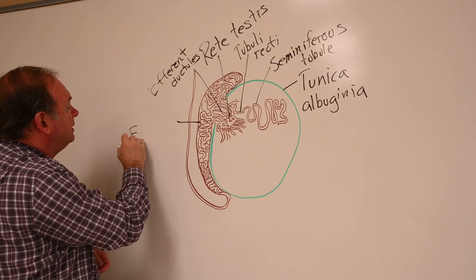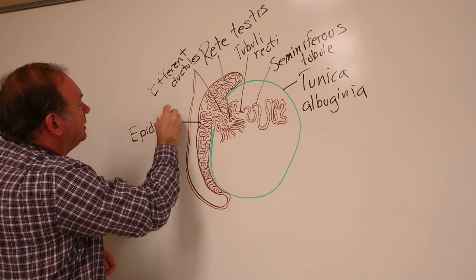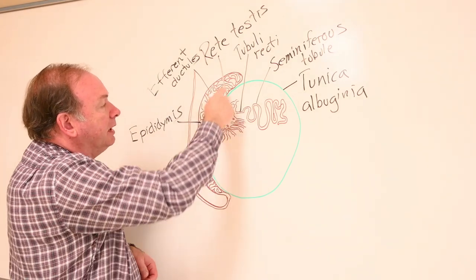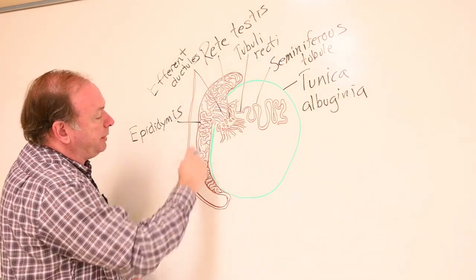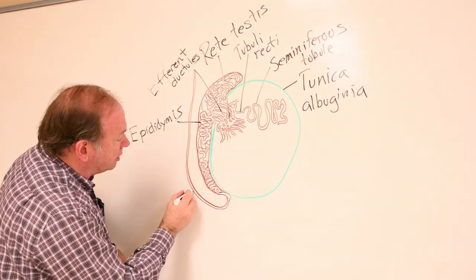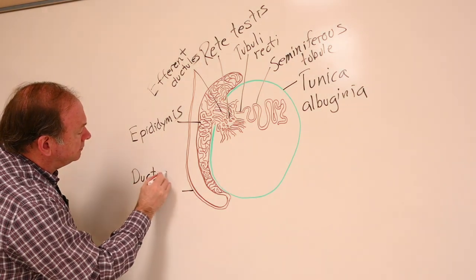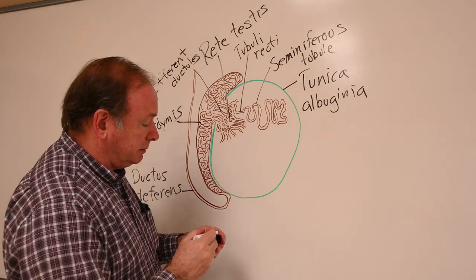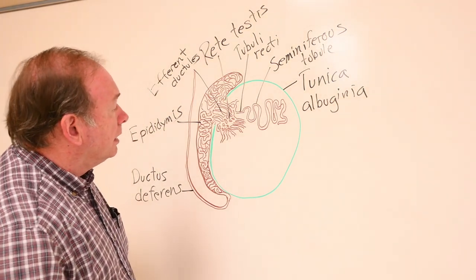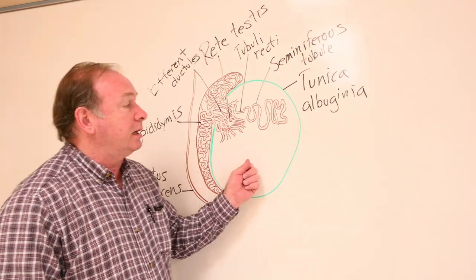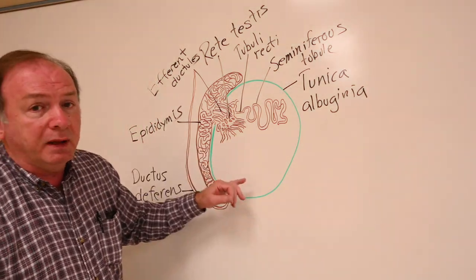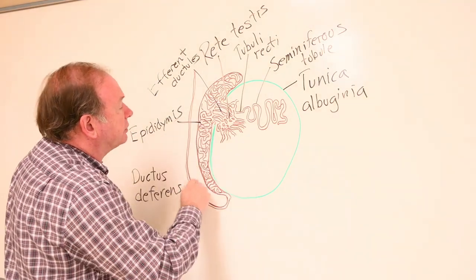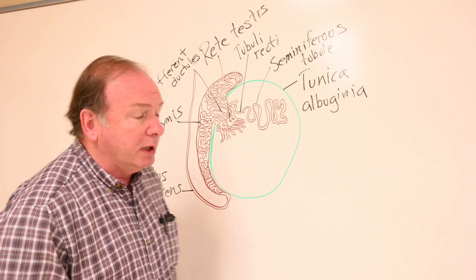The epididymis has a region referred to as the head, the body, and the tail. From the top to the bottom, that's all epididymis. At the very tail of the epididymis it leads into the ductus deferens, also known as the vas deferens. All of this is within the scrotal sac and represents the very beginnings of the male reproductive system pathway. The ductus deferens will lead out of the scrotal sac and up into the body cavity.